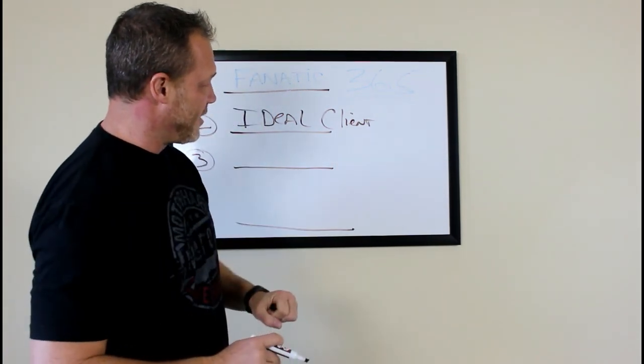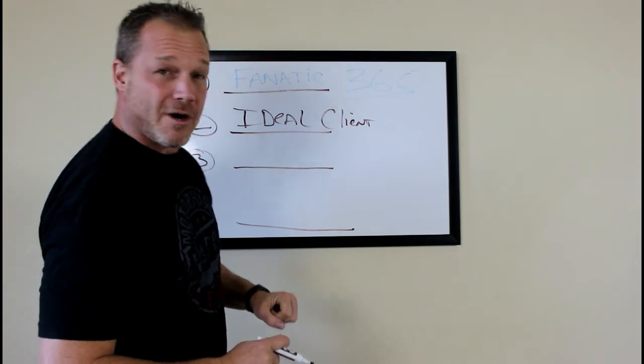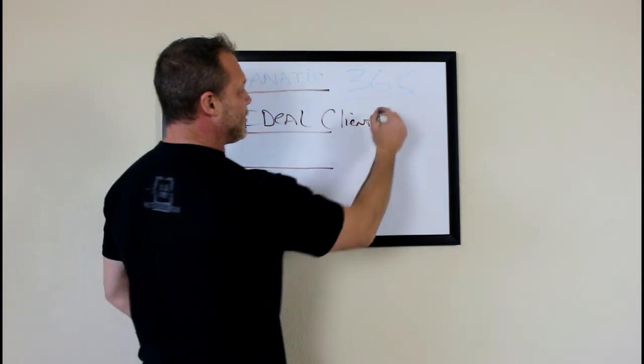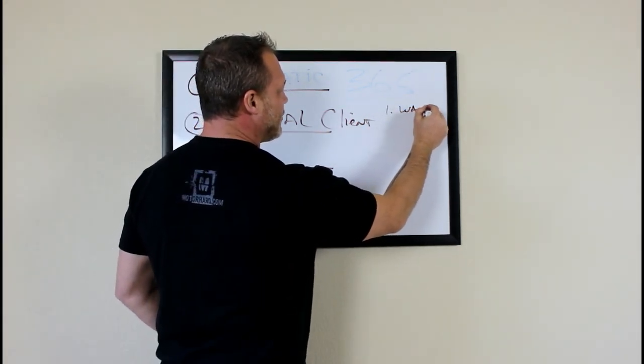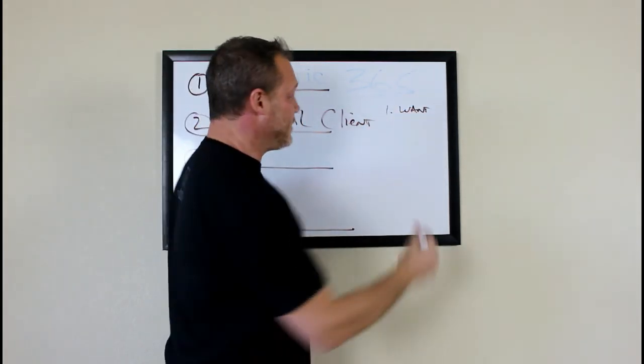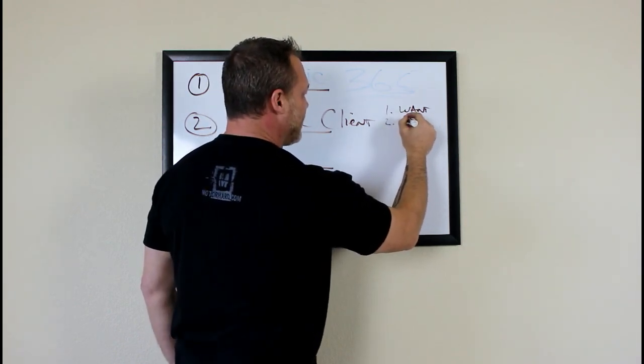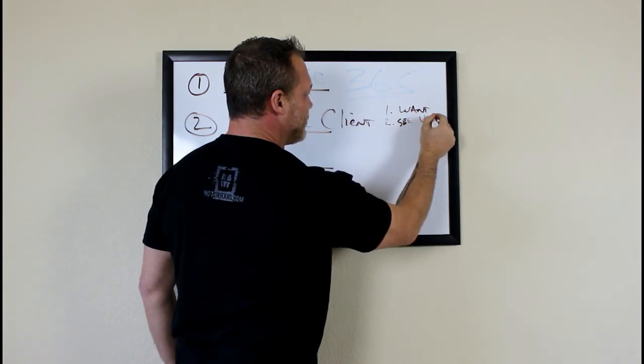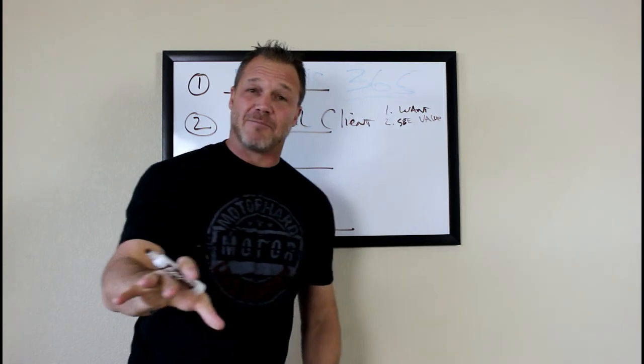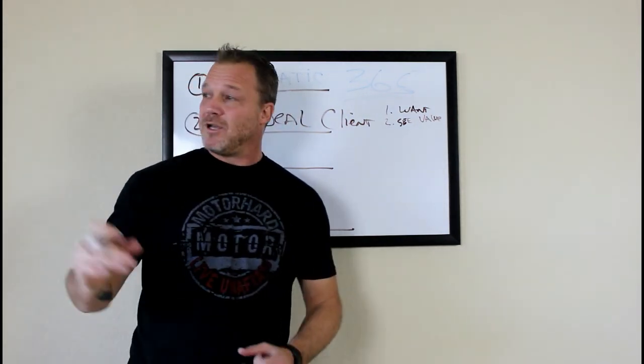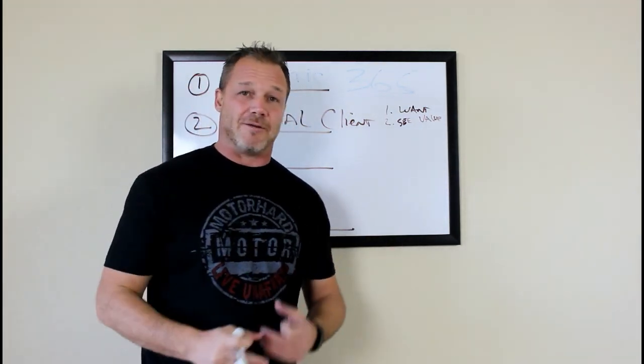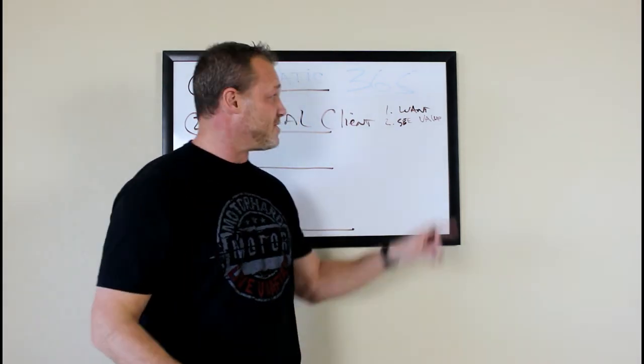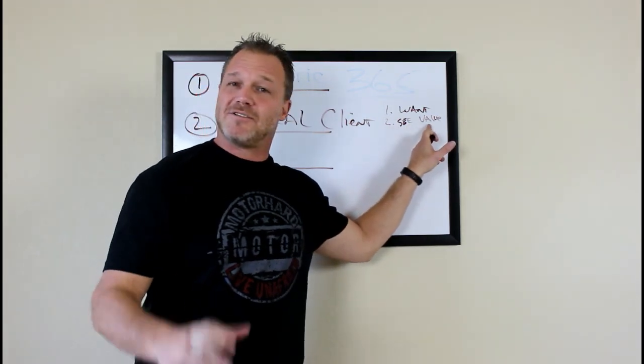So I want to give you four quick things here. These are how I define an ideal client. Number one, they need or want what I do. Number two, they see the value in what I do. Like the example I just gave to you, that woman saw the value when everyone else was ten grand and we were eighteen, twenty, twenty-five thousand dollars. She knew that we were going to come through with her and she saw the value in what we did and she wasn't a price shopper.